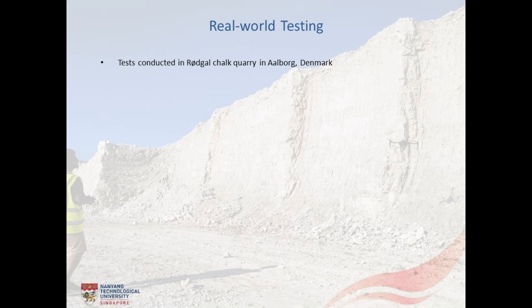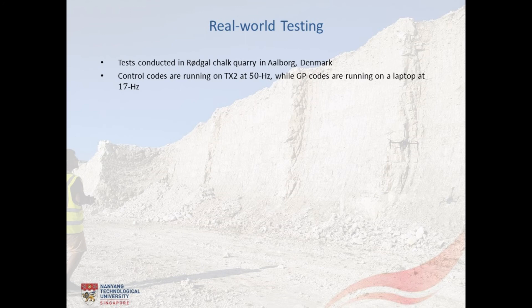During this experiment, the controller codes are executed on the TX2 with a sampling frequency of about 50 Hz, while the GP codes are running with approximately 17 Hz on a laptop. Also, the robot flies with conventional NMPC for the first 42 seconds and subsequently switches to the GP-NMPC framework.